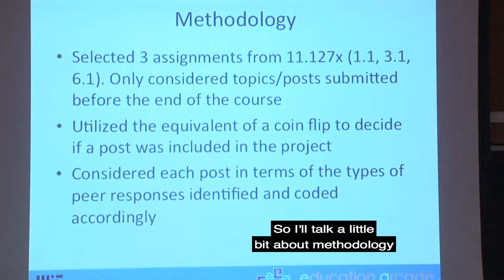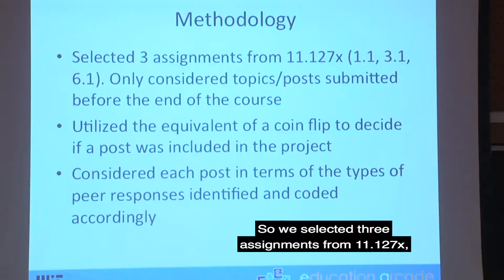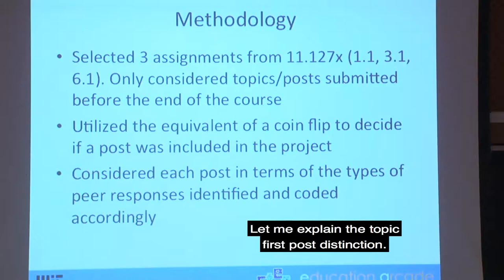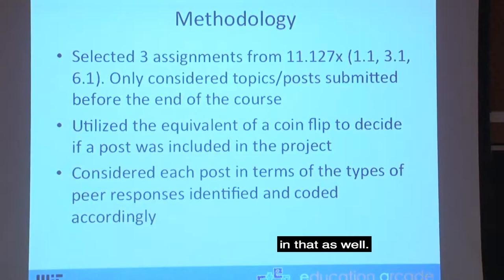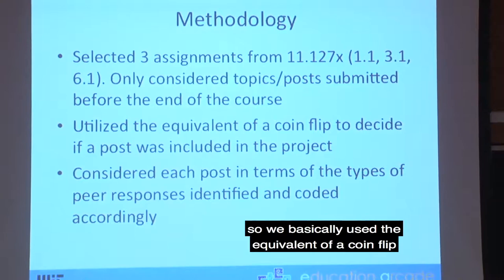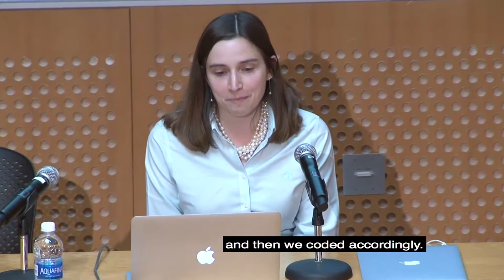For methodology, we selected three assignments from 11.127X — one in Unit 1, one at Unit 3, and one at Unit 6 — and only considered topics and posts submitted before the end of the course. When a participant posts their work on an assignment, that's a topic, but other participants may respond, creating posts within that topic. We used the equivalent of a coin flip to decide if a post was included in the sample, then coded each included post according to the three peer response types.